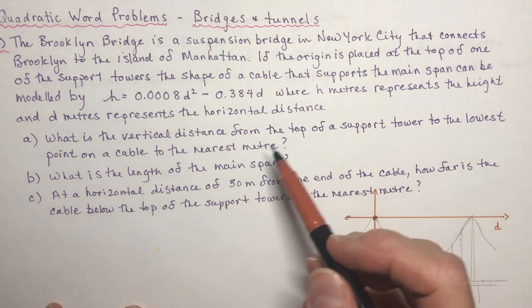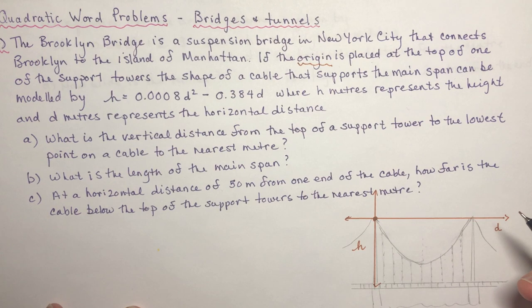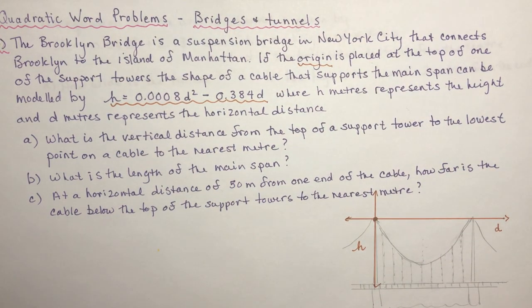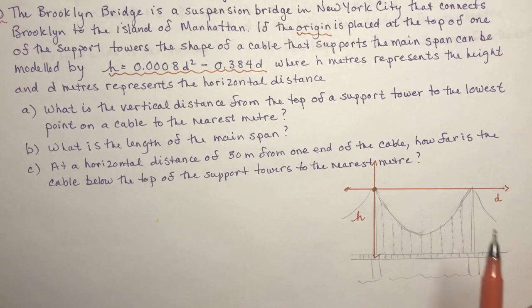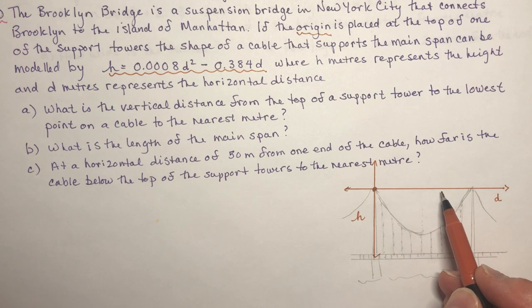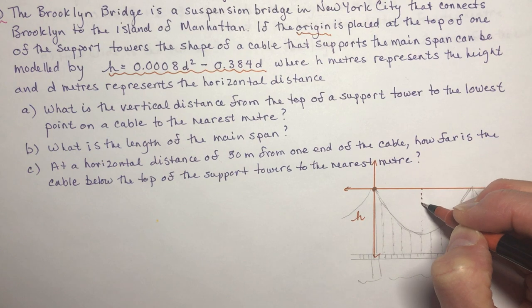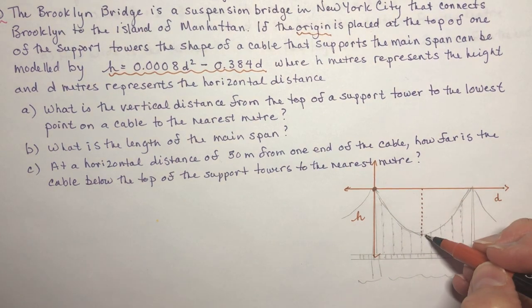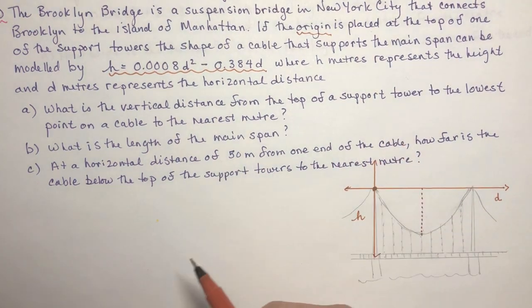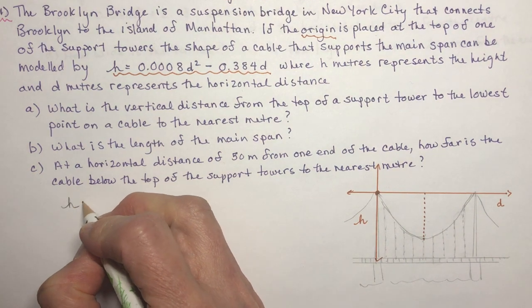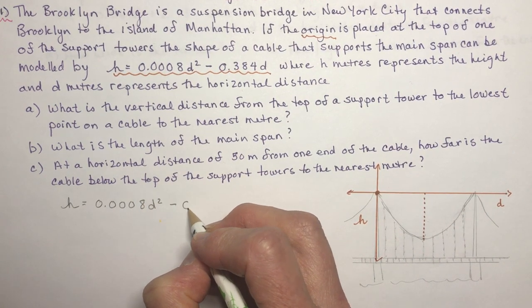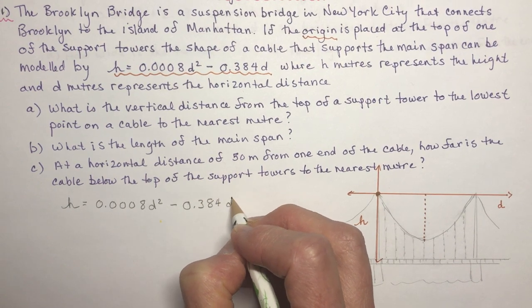We have an equation drawn on here and we've got meters. The origin is placed at the top of one of the support towers, and the equation is very important in this word problem. Question A asks: what is the vertical distance from the top of a support tower to the lowest point on a cable, to the nearest meter? It's going to be under my axis so I'll get a negative value, but the distance is the absolute distance so we call it positive. You can see that we have a parabola that is concave up because the a value is positive.